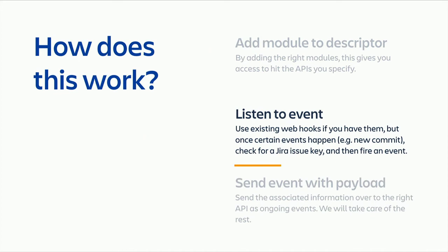Now you've got an app, it's been deployed, and installed into a Jira instance. At this stage, your app needs to listen to events — events that are taking place, such as a build has just been started, a build has finished, a deployment has started. Your app will need to listen to these events, defined by whatever mechanism the tool has.